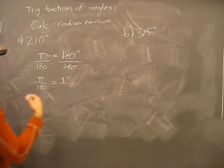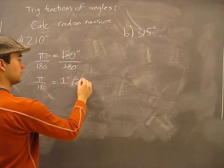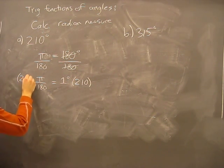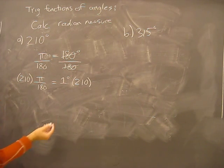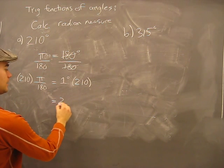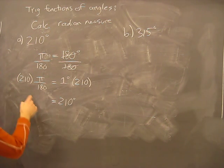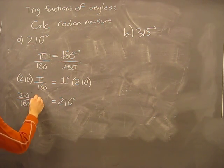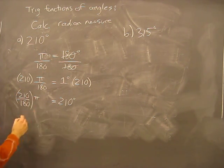So now all I'm going to do is multiply both sides by 210. So now on my right side I have 1 degree times 210. There's my 210 degrees. And on this side I have 210 over 180 times π.